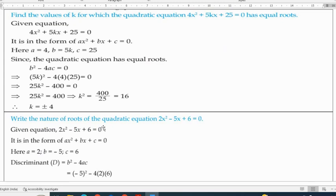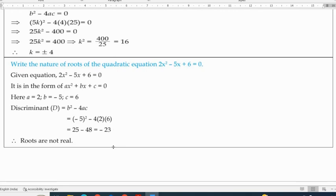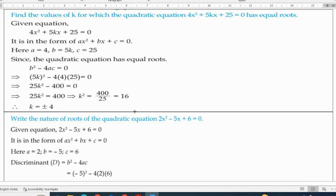Quadratic equation: find the value of k for 4x square plus 5kx plus 25 equals 0 to have equal roots. Equal roots means b square minus 4ac equals 0. Replace values to find k. This is one of the most important questions. Write the nature comment or discriminant. Use b square minus 4ac. Negative answer means no real roots, positive answer means roots are real and distinct, zero means roots are real and equal.